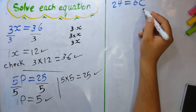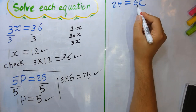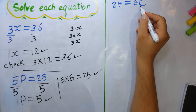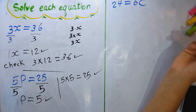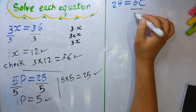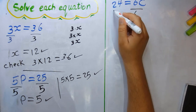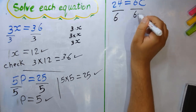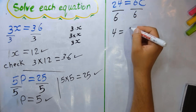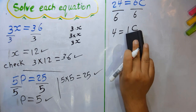We want to make c alone on the right side without any number. We need to remove 6. Since 6c means 6 multiplied by c, we divide the right side by 6, and must also divide the left side by 6. So 24 ÷ 6 = 4, and 6 ÷ 6 = 1c, which is just c.